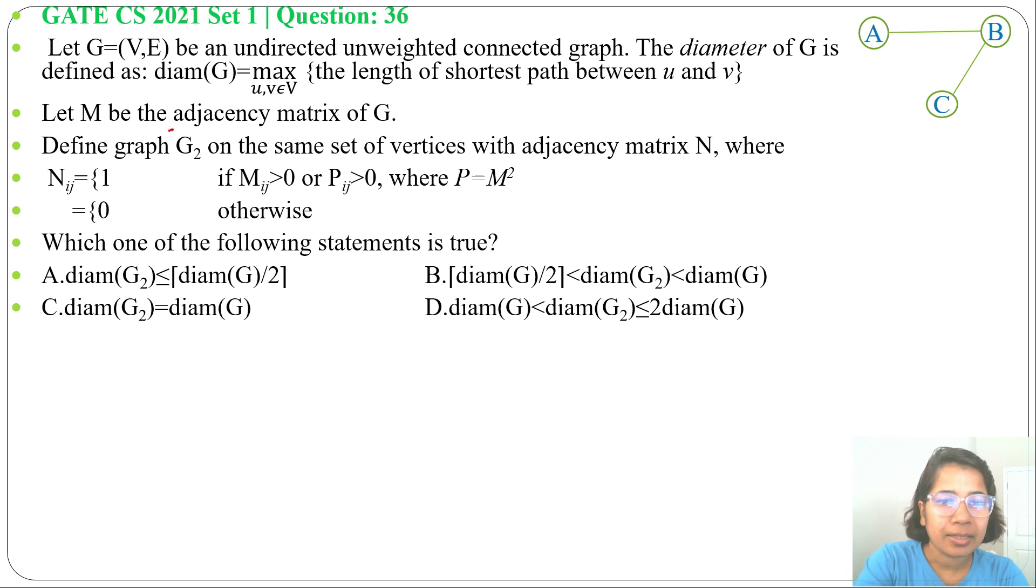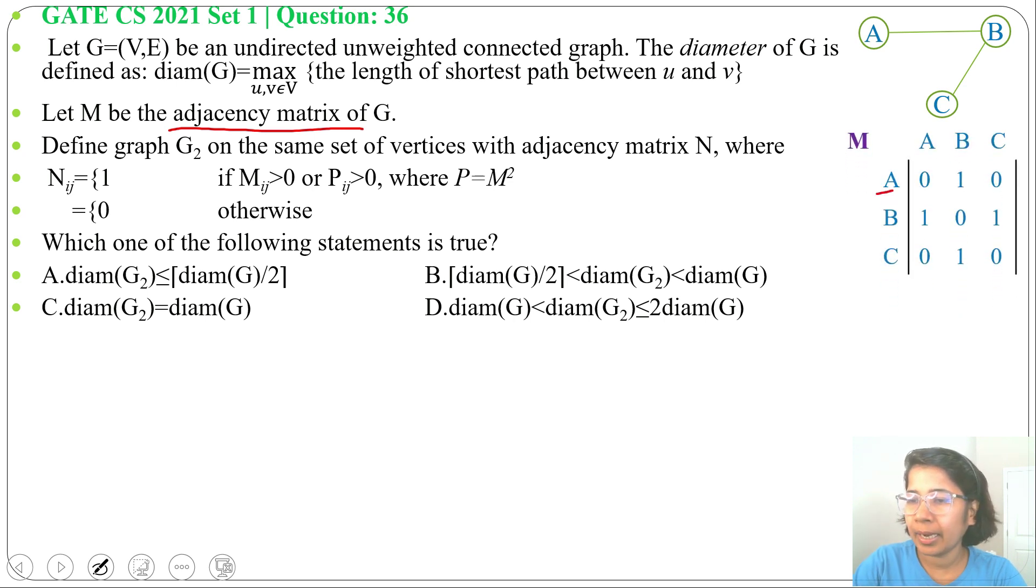Now we'll find the adjacency matrix. So the adjacency matrix, in A row, A to B will be 1 as there is an edge, then B to A will be 1, B to C will be 1, then in C row, C to B will be 1.